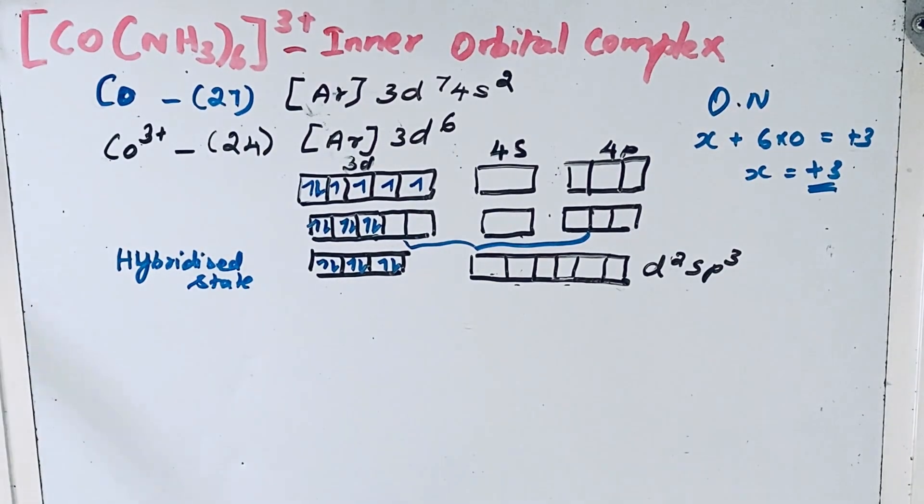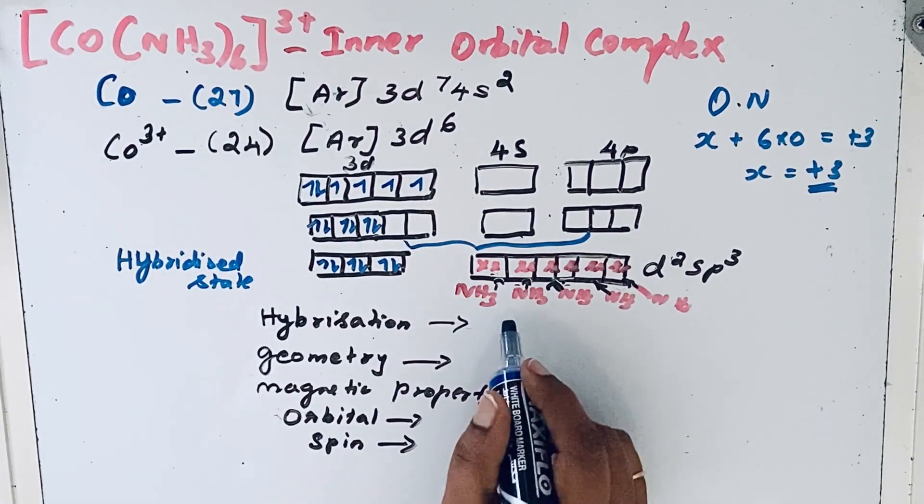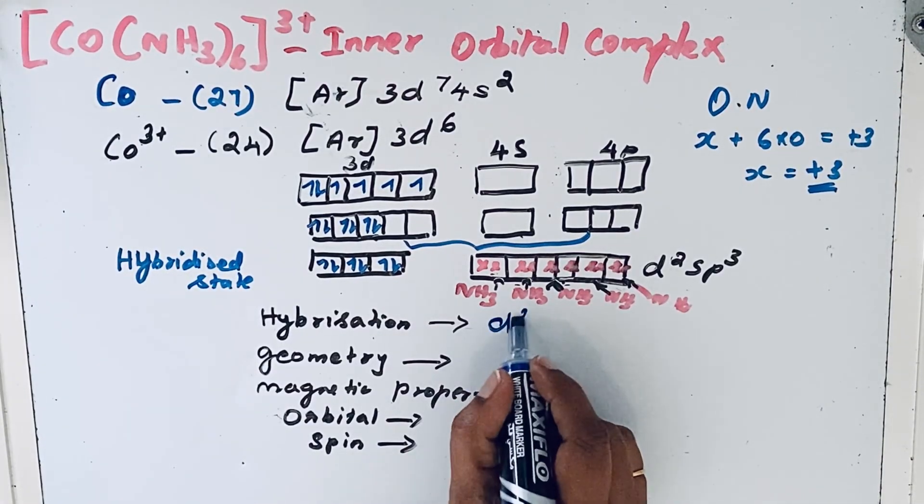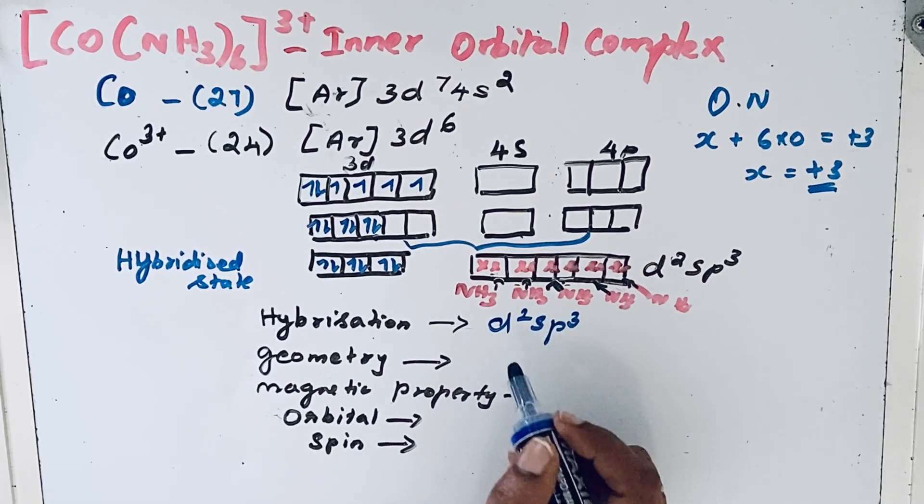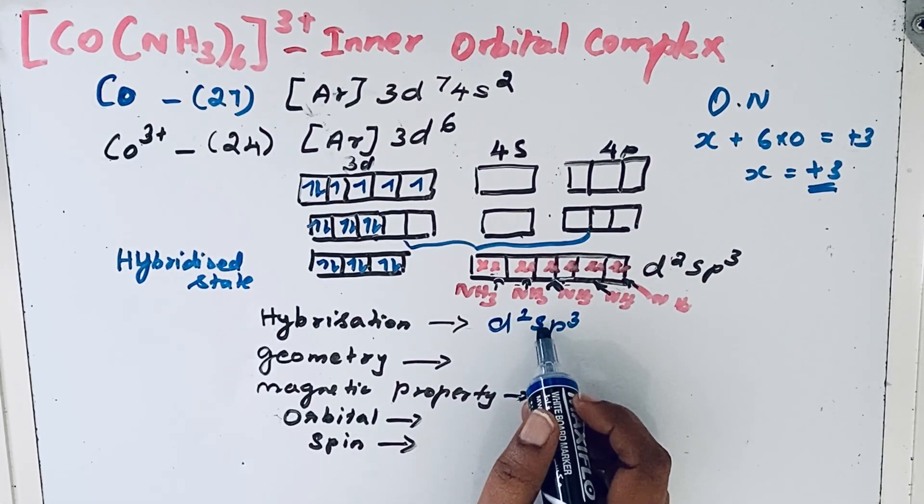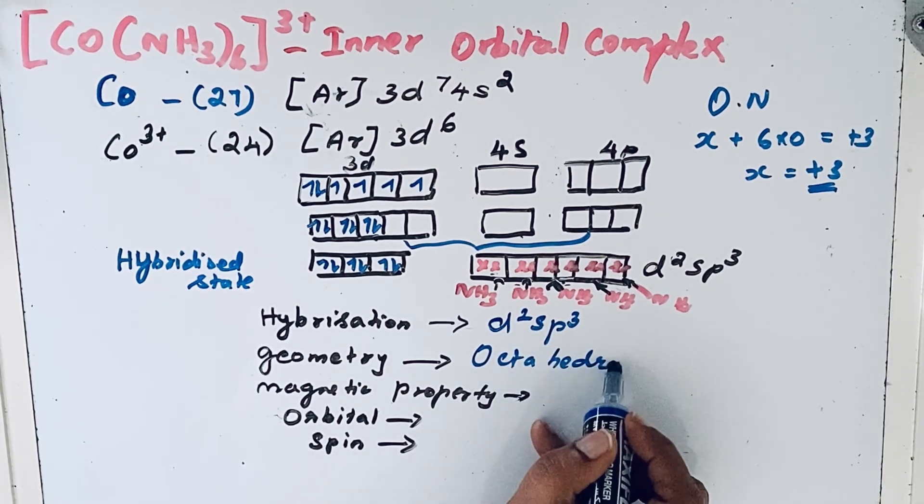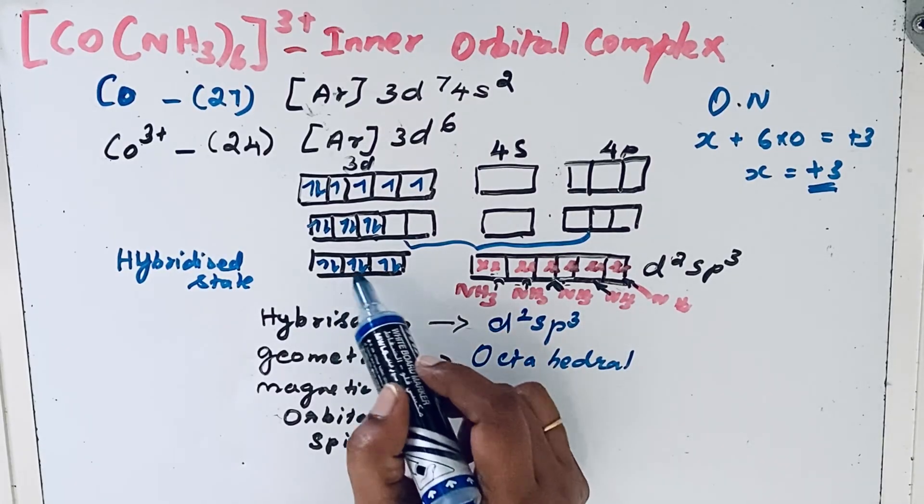NH3 is a ligand. The hybridization is d2sp3 hybridization. Because of the d2sp3 hybridization, the geometry is octahedral. Now for the magnetic property...